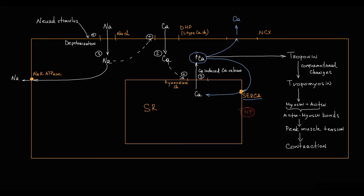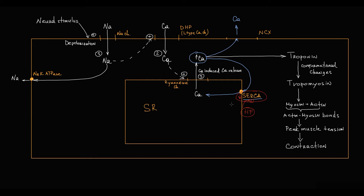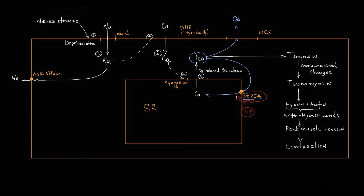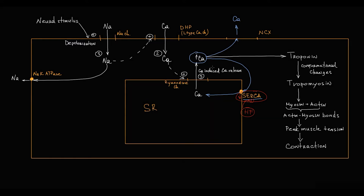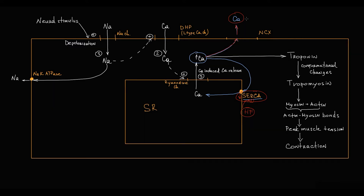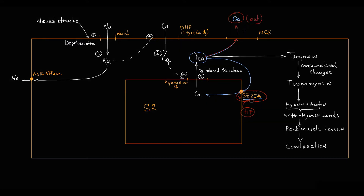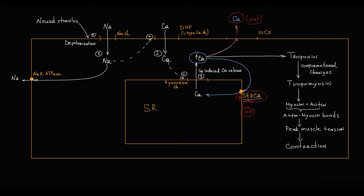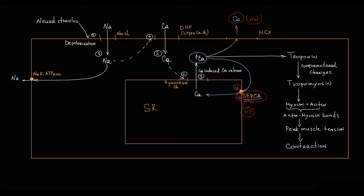But in heart failure, the expression of SERCA protein on the endoplasmic reticulum is decreased. In this case, to provide relaxation, the decrease in calcium in the cytosol occurs mostly through the sodium-calcium exchanger, which exports calcium out of the cell. Because the expression of SERCA protein decreases, less calcium ions are pumped into the endoplasmic reticulum.